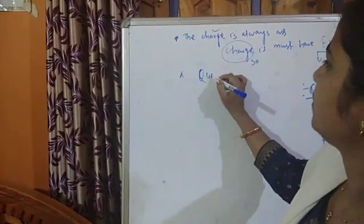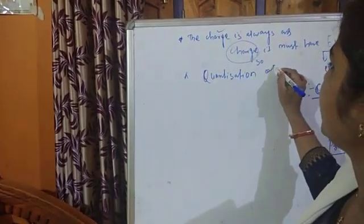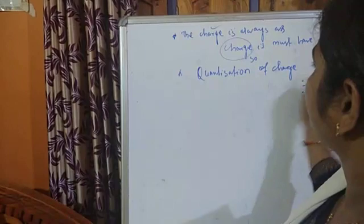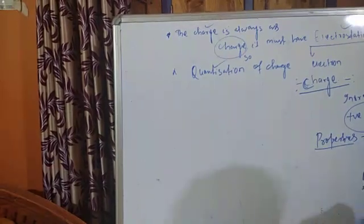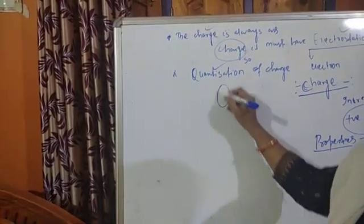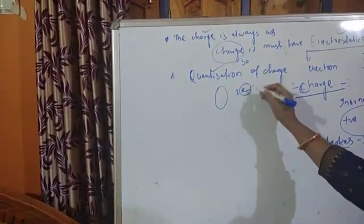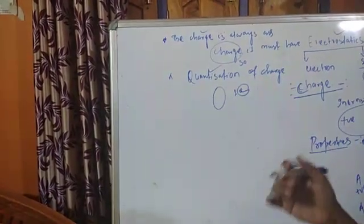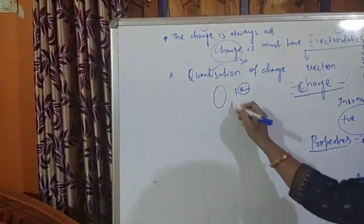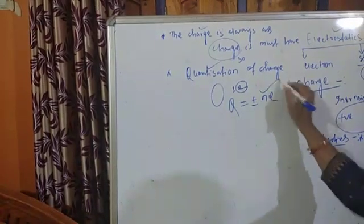The next property is the quantization of charge. This is a very basic property. Quantization — quanta means packet. Charge is always available in terms of packets of electrons. If we want to remove one electron from a body, we will have to remove the amount of charge carried by the electron. That means charge is always an integral multiple of the charge of the electron.